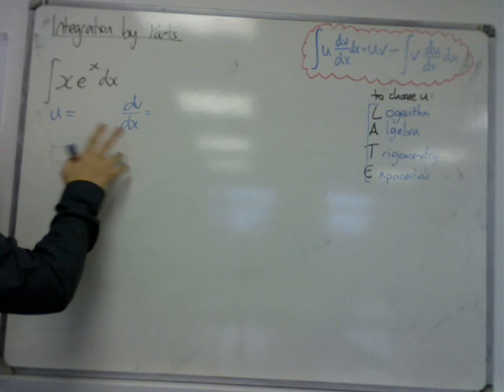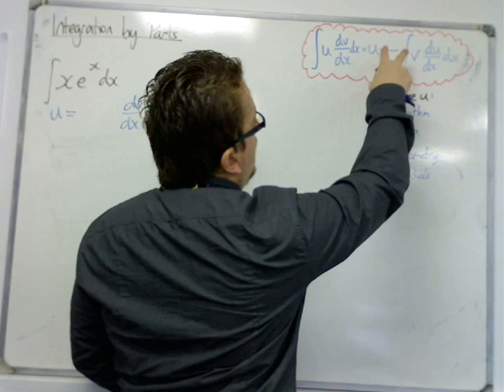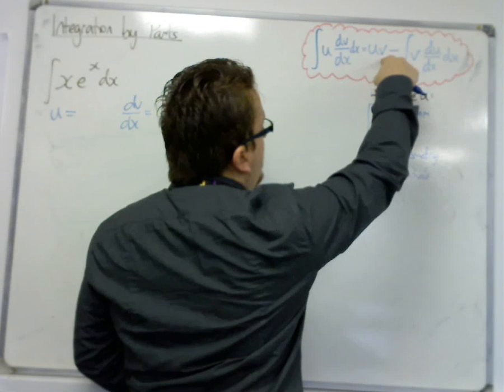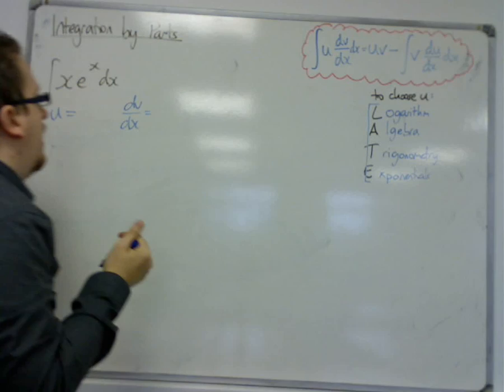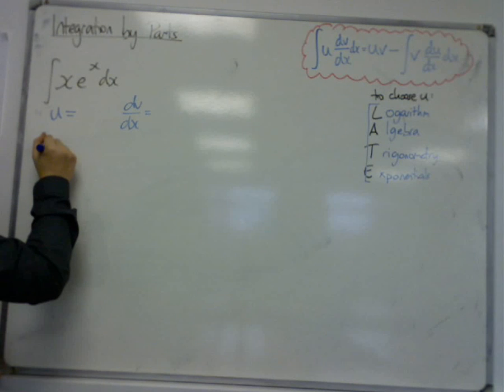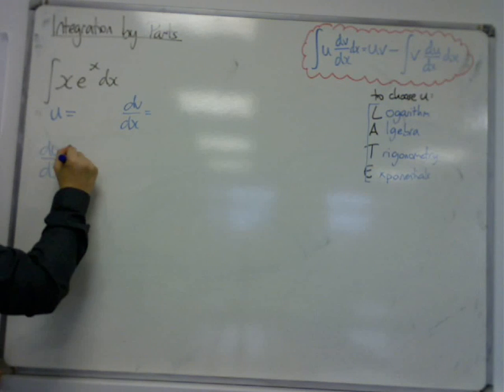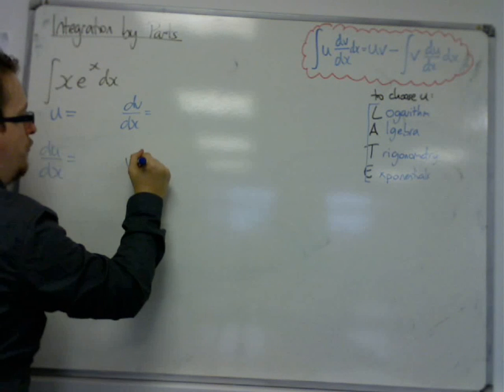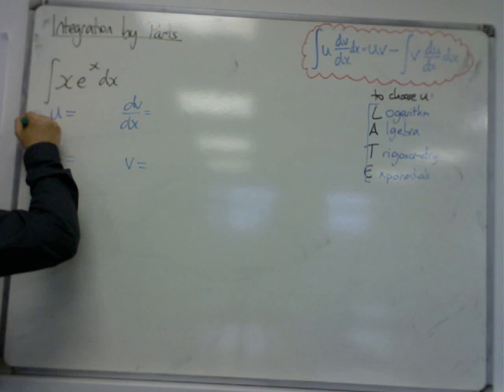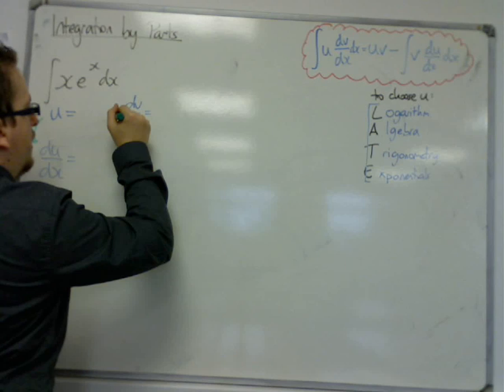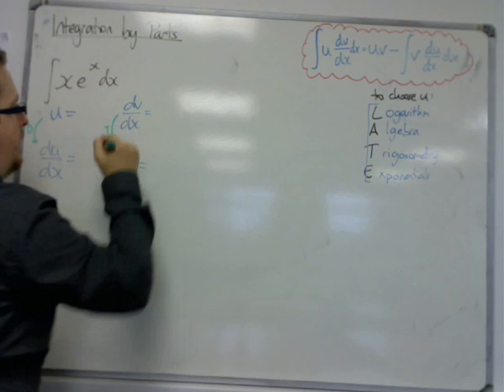Look at what we're going to need. We're going to need v, and we're going to need du/dx. So we're going to need to find du/dx from u, and v from dv/dx. So we're going to have a process of differentiating, and we're going to have a process of integrating here.